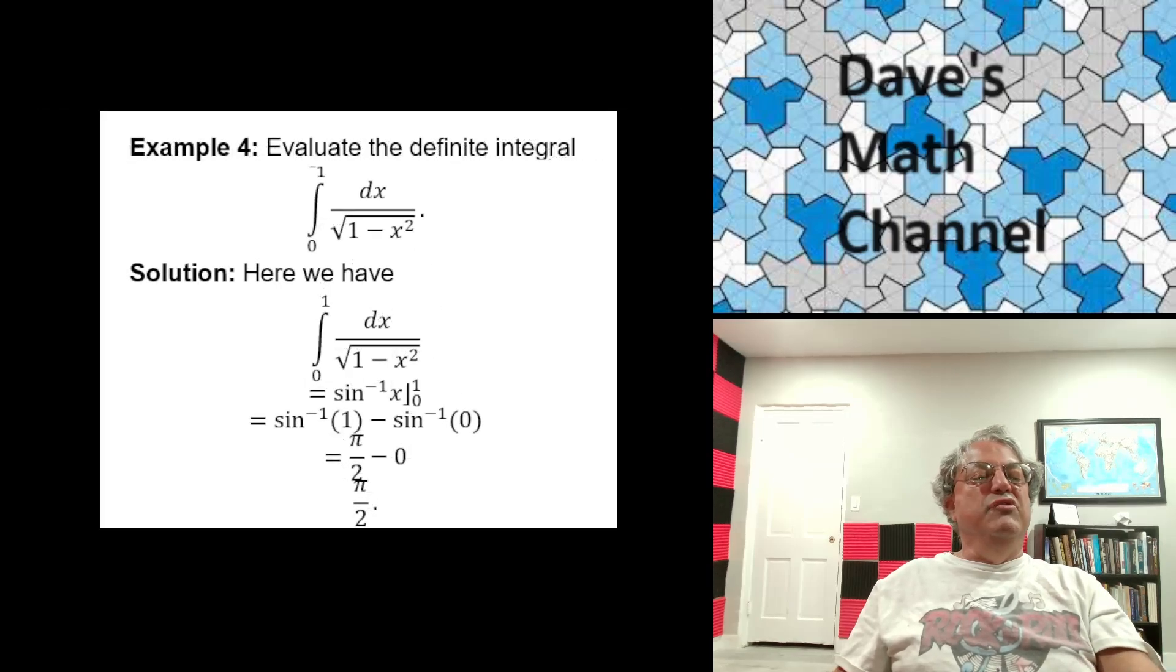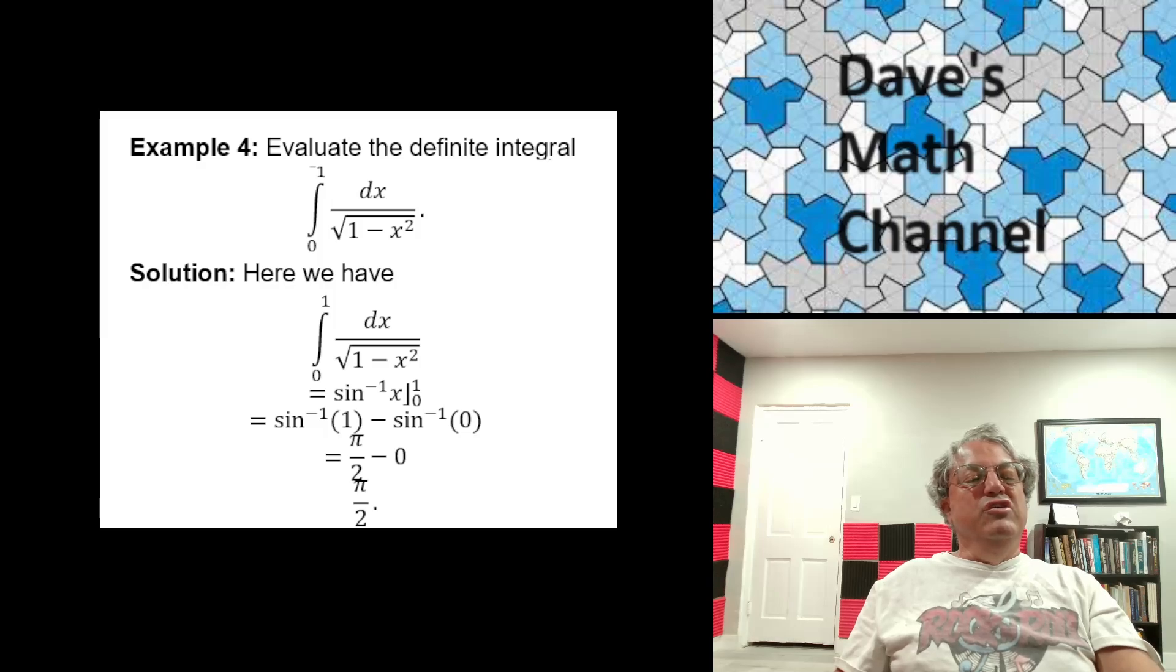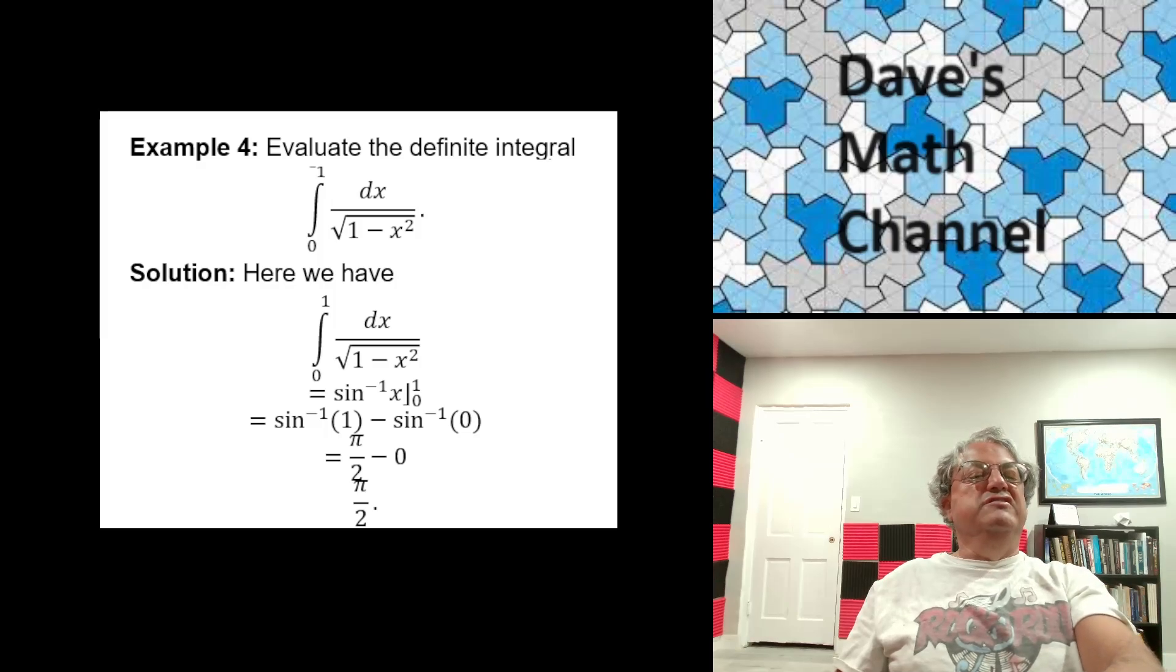Let's look at another example. How about the definite integral of dx over square root of 1 minus x squared, x going from 0 to 1? Well, again, this is one we can get immediately from the table. This integral just happens to be arc sine of x. And we're evaluating arc sine of x from x equals 0 to x equals 1. So this is arc sine of 1 minus arc sine of 0. And arc sine of 1 is pi over 2. And arc sine of 0 is 0. So we get pi over 2.